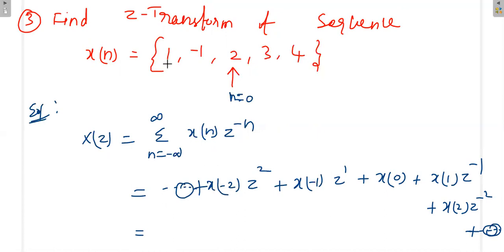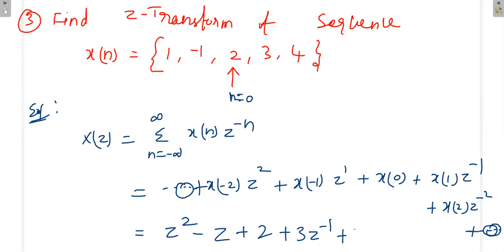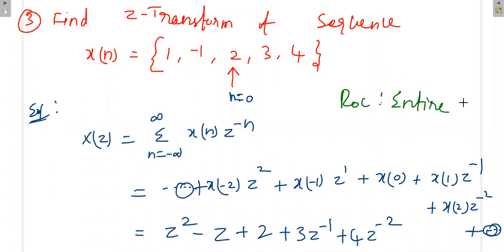The ROC: to get this answer, no restriction was placed on z. The ROC is the entire z-plane. This is because the given signal is a finite-duration signal with only 5 samples. For a finite duration signal, the ROC is the entire z-plane. Thank you.